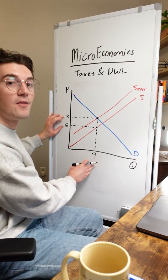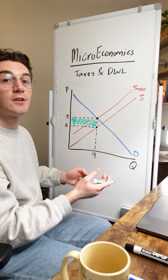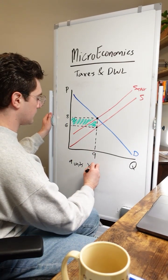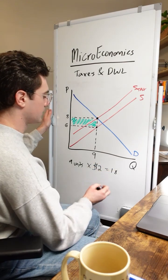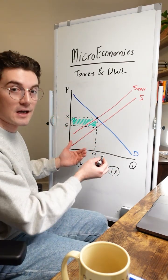And in this market now, they're selling nine units. So this green rectangle right here is the total tax revenue that the government receives by instituting this tax. Nine units times $2 equals $18. The government's receiving $18 via this green rectangle of tax revenue.